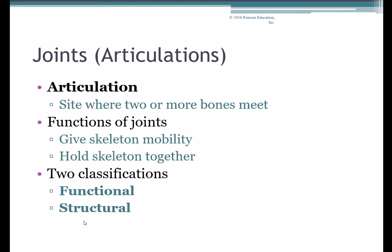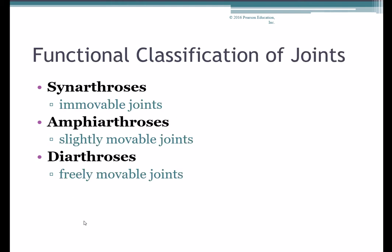An articulation is where the ends of bones and their various bone markings come together and meet. This gives our skeleton lots of flexibility and mobility that it wouldn't otherwise have, since the bones themselves are rigid structures. It's also how the skeleton is held together — how this giant jigsaw puzzle fits together. There are two ways we classify joints: based on function, which is the amount of movement permitted, and based on structure, what material makes up the joint.